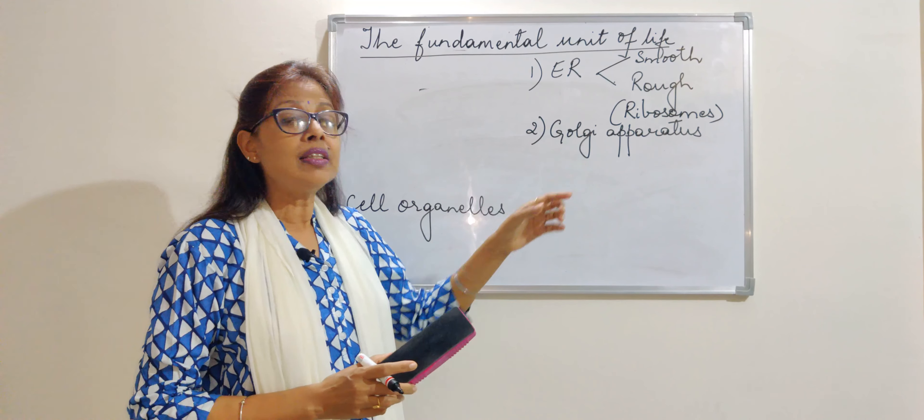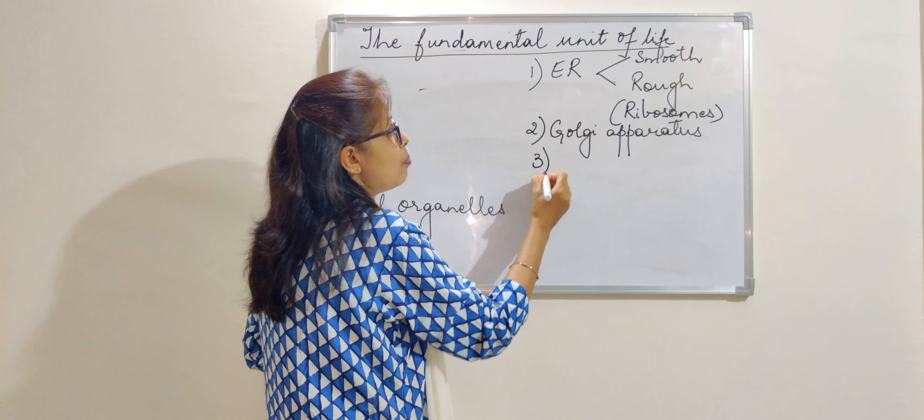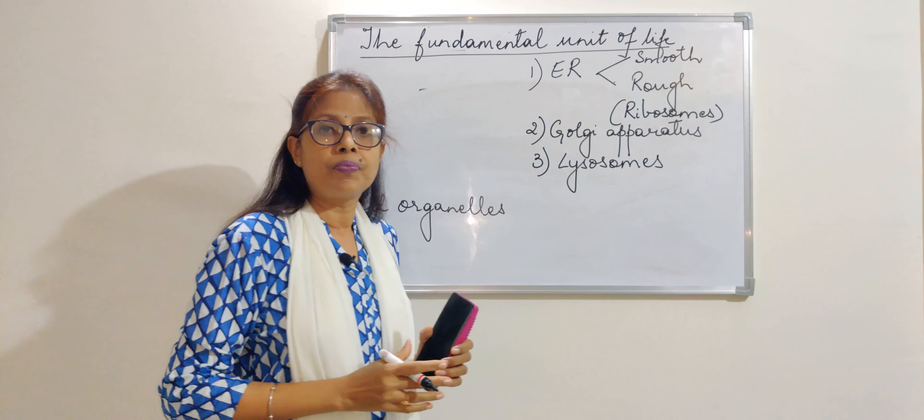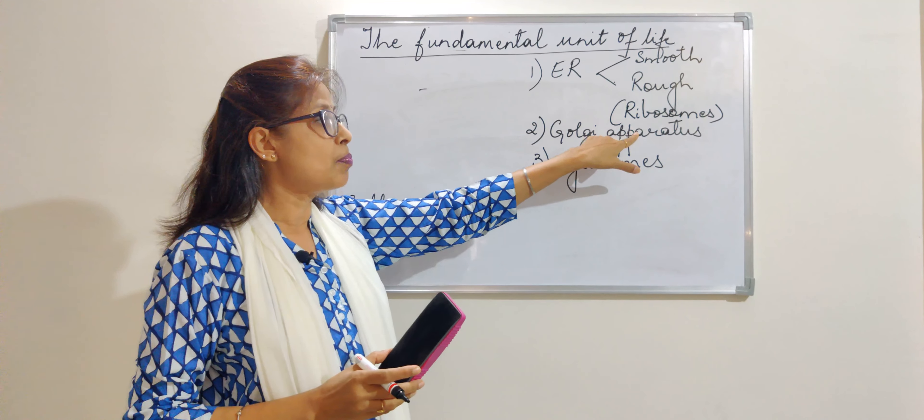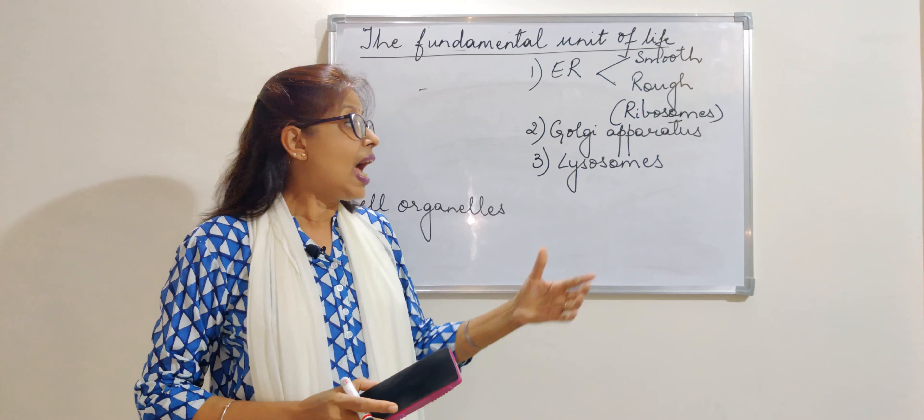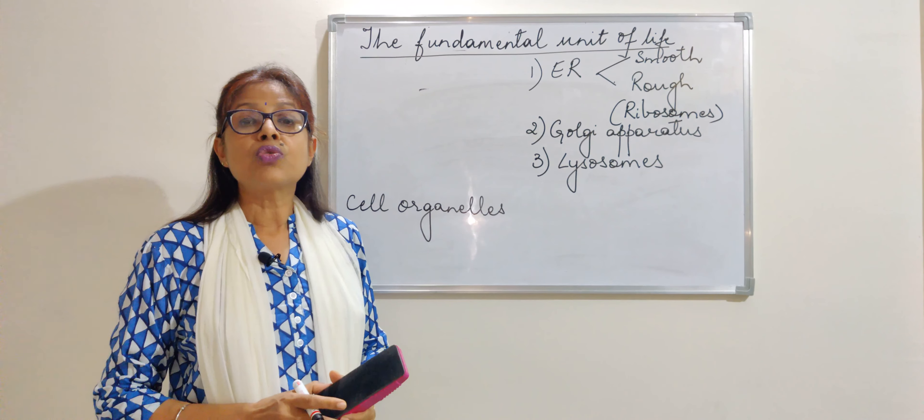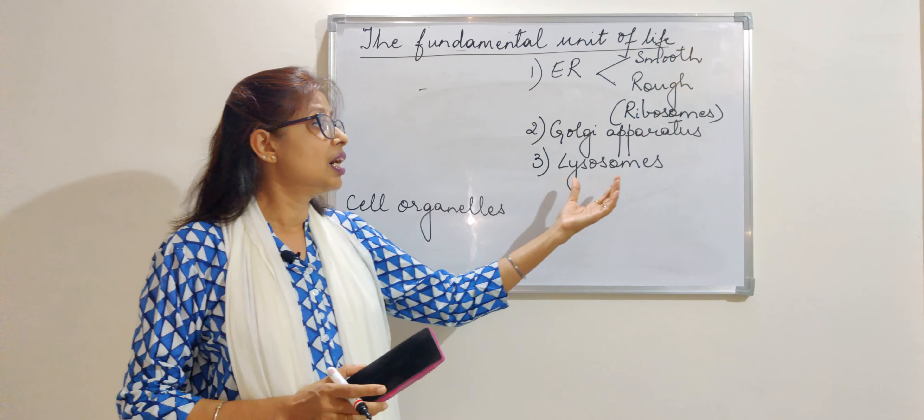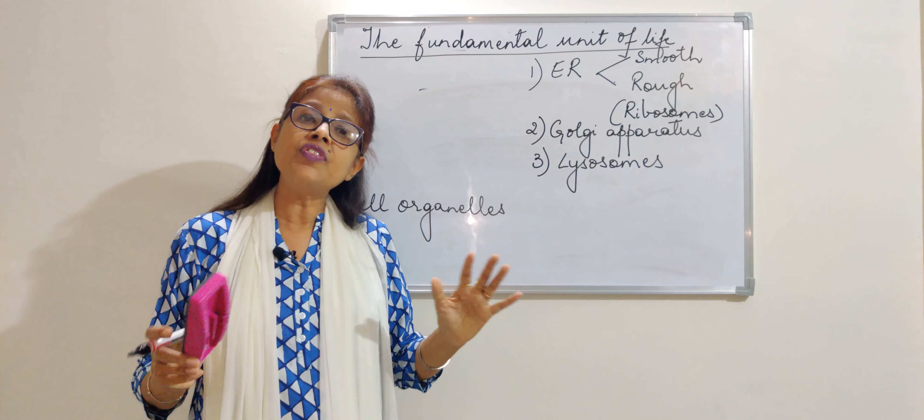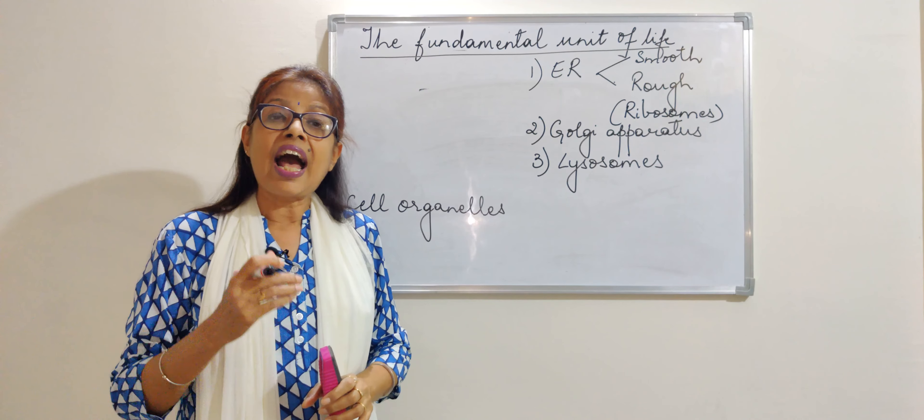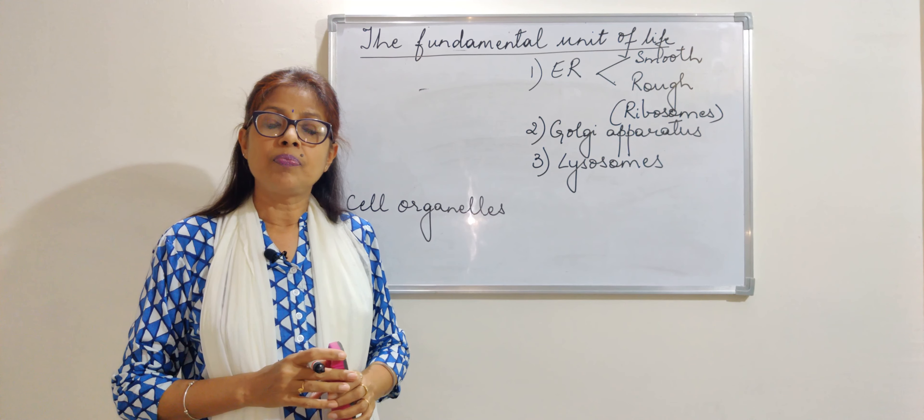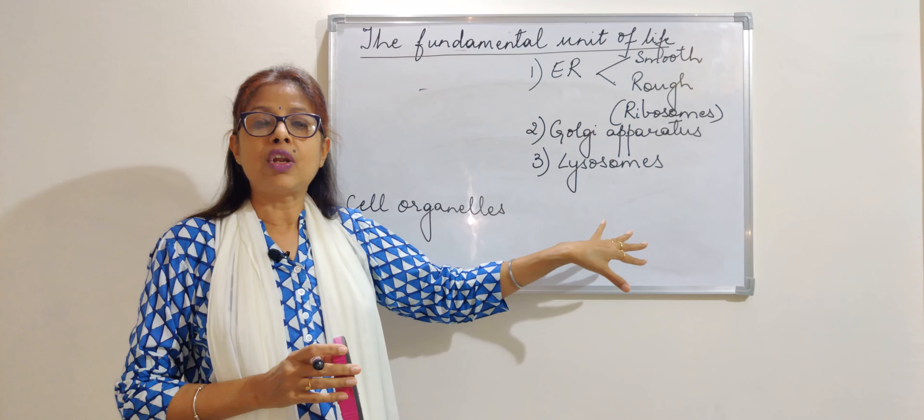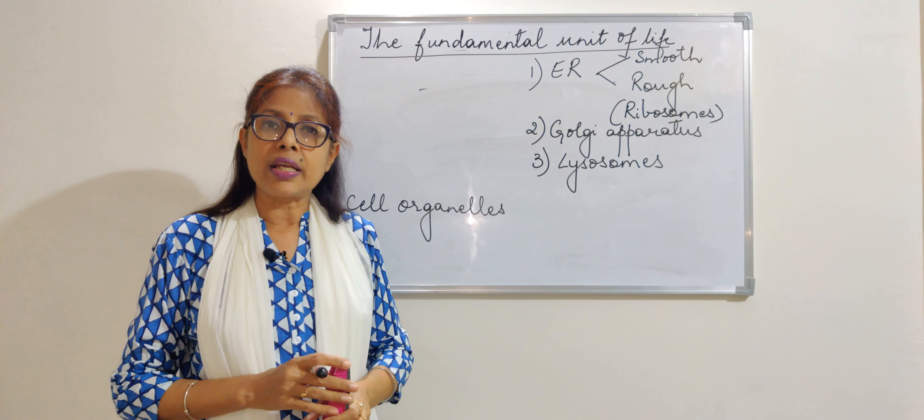They have another important function—they make another cell organelle called the lysosomes. These lysosomes are made by the Golgi apparatus, and these lysosomes are said to be the suicidal bags of the cell. They secrete a digestive enzyme which engulfs the whole cell, kills the cell, and is replaced by a new cell. In the process, they themselves kill their own cell organelle. So it is said to be suicidal bags.